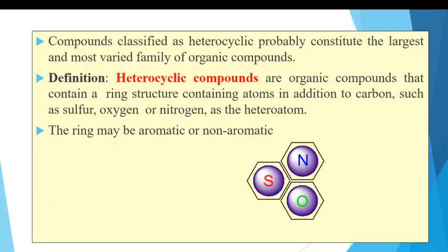Compounds classified as heterocyclic probably constitute the largest and most varied family of organic compounds. Heterocyclic compounds are organic compounds that contain a ring structure containing atoms in addition to carbon, such as sulfur, oxygen, or nitrogen as the heteroatom. So the three important heteroatoms present in heterocyclic compounds are sulfur, oxygen, and nitrogen.